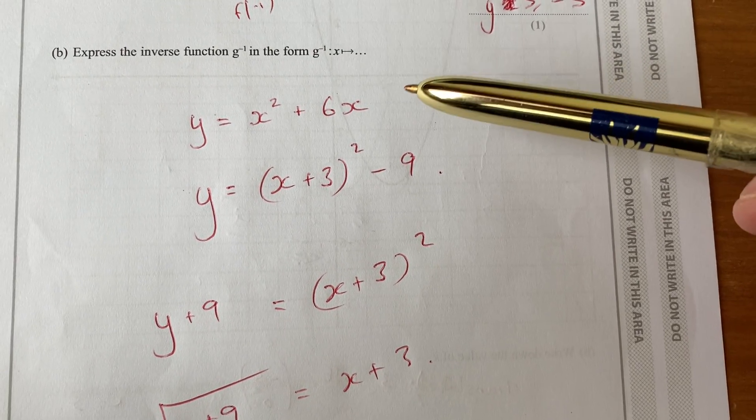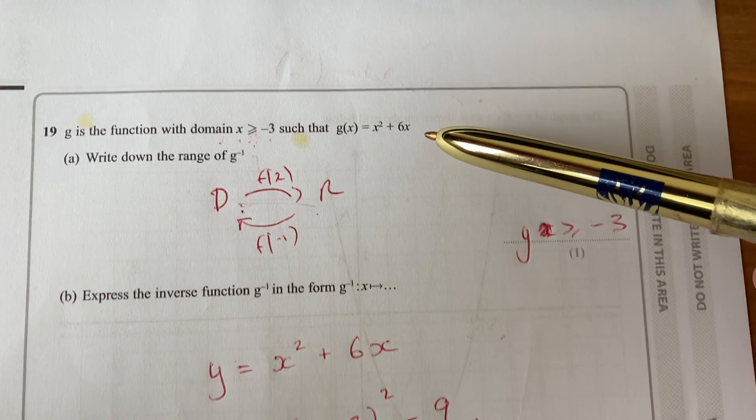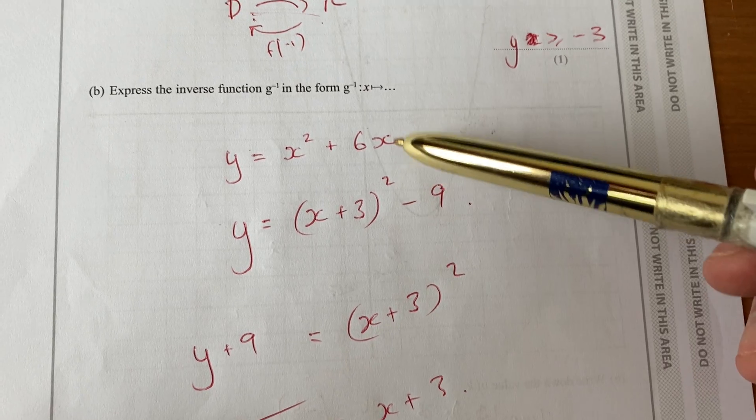Inverse function—we've got a quadratic here. To do an inverse function for a quadratic, you need to complete the square. So completing the square: